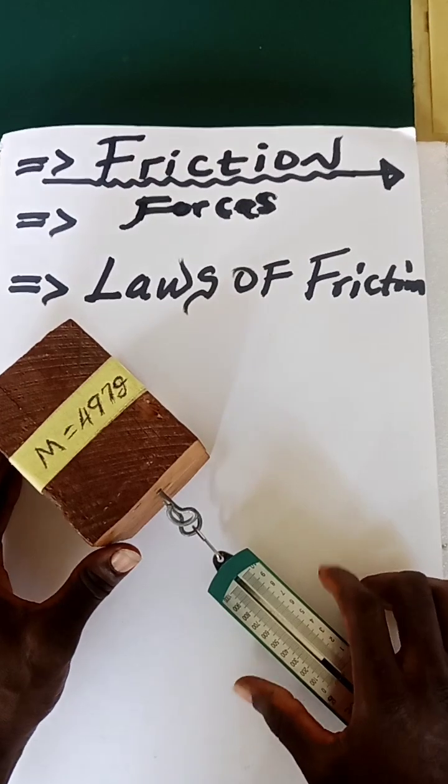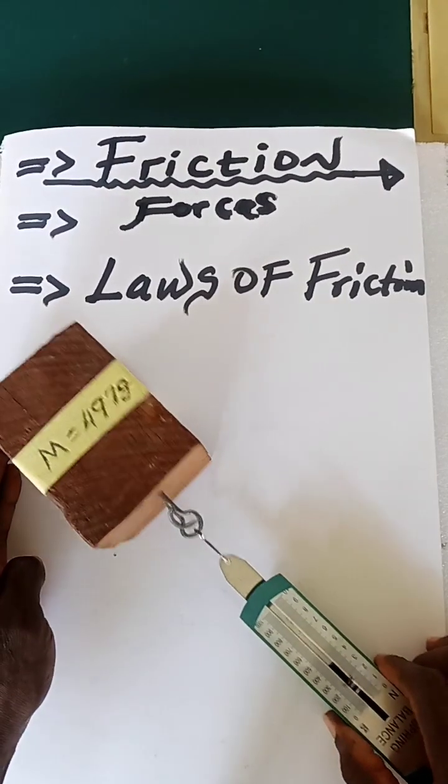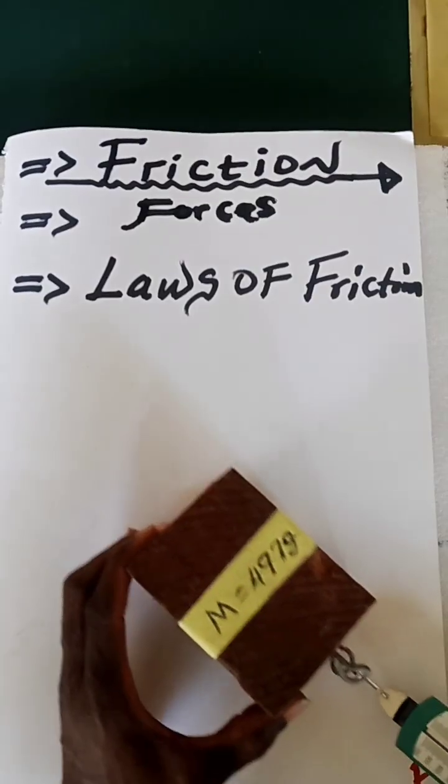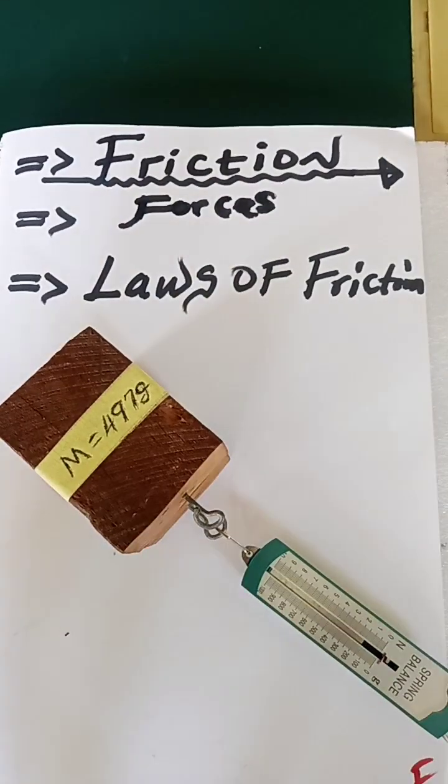What this law is trying to say is that if I pull this object this way, the frictional force will act this way. And if I push this object this way, the frictional force will act this way.